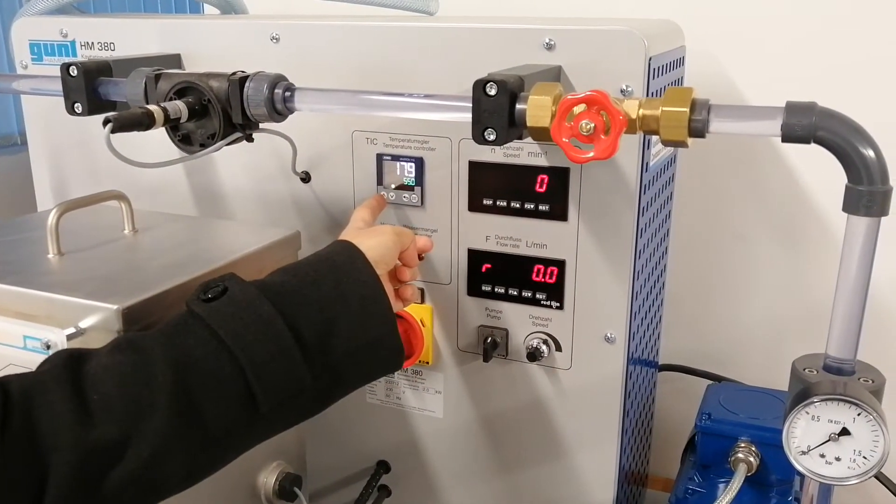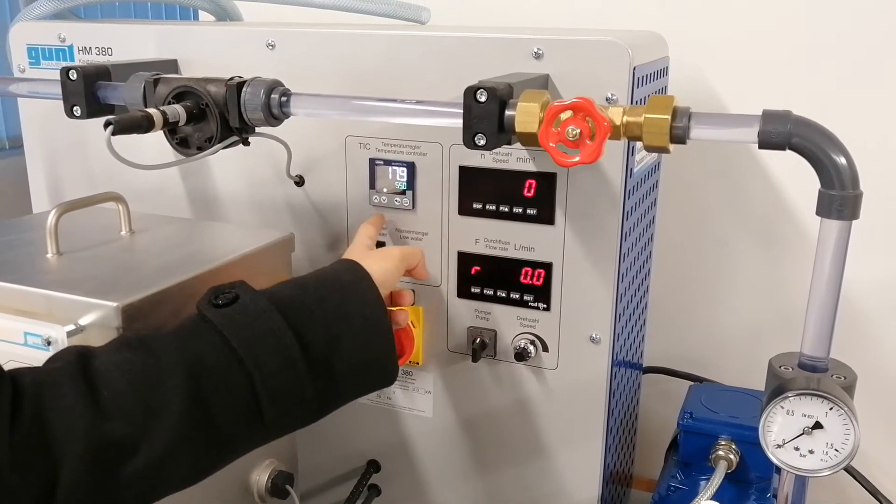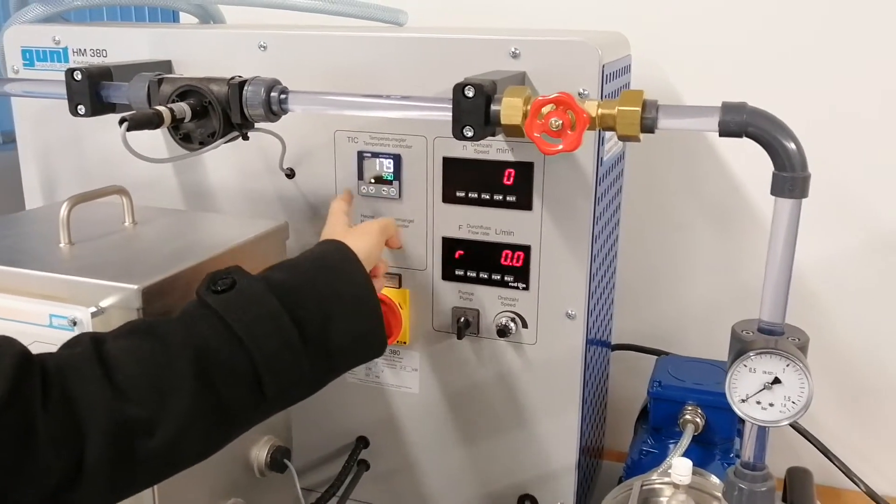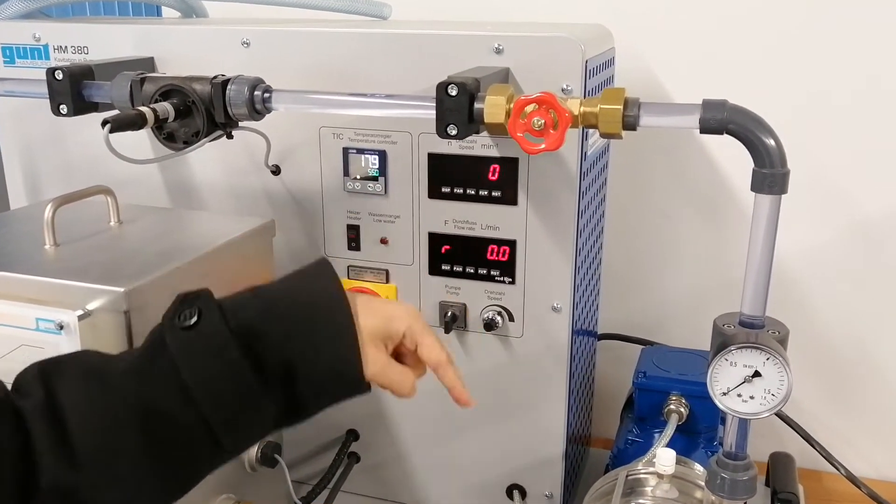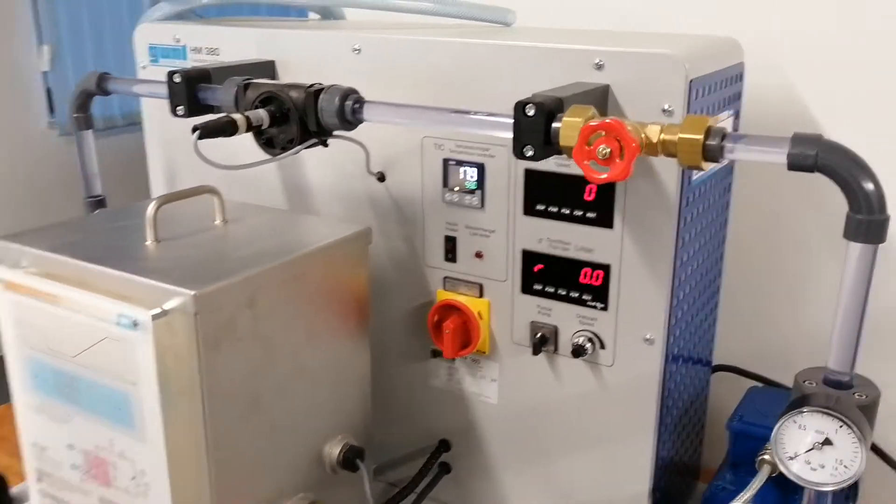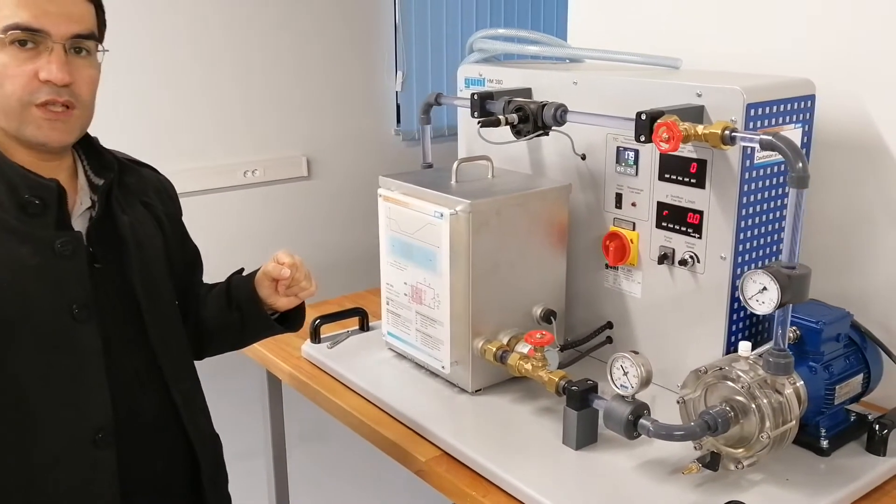And this is for temperature increase. This is heater. If you open the heater, you can adjust the temperature from here. And it can heat the water. And you can observe the effect of temperature on cavitation. Okay, that's all for explanation. Now we can start our experiment.